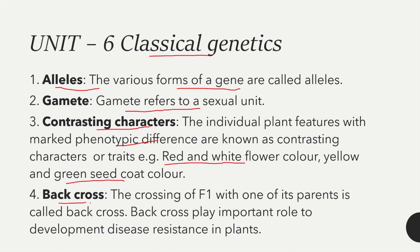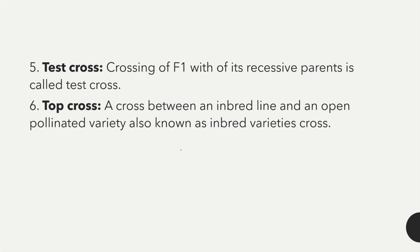The next term is backcross — the crossing of F1 with one of its parents is known as a backcross. The next term is top cross — a cross between an inbred line and an open pollinated variety is known as a top cross.